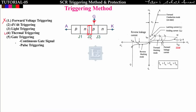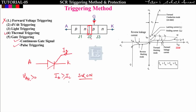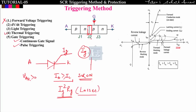The fifth and best method is gate triggering. There are two types: continuous gate triggering and pulse gate triggering. In continuous gate triggering, we supply VAK greater than 0 and then supply gate current IG continuously. Once the anode current becomes greater than or equal to the latching current, the SCR turns on and remains on even if gate current is removed. However, supplying gate current continuously results in losses equal to IG² × RG, where RG is the gate resistance.